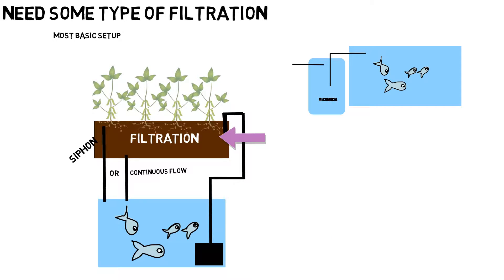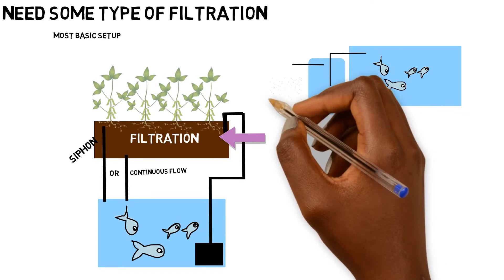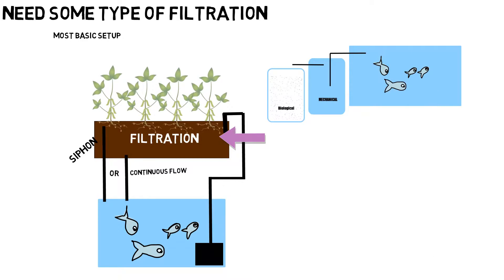And this is going to be some type of a radial flow filter or some type of swirl filter or matting filter. One of these methods you're going to use to collect the large solids inside of your fish tank. And then from there, it'll go and connect to a biological filter, which is going to encourage your beneficial bacteria to colonize.